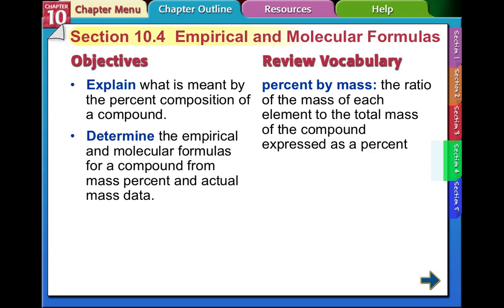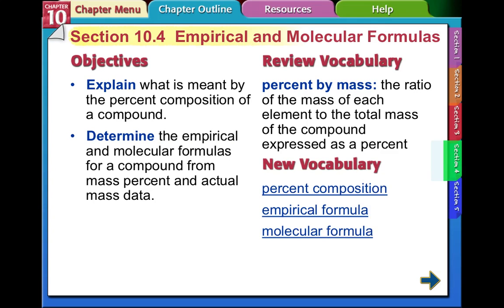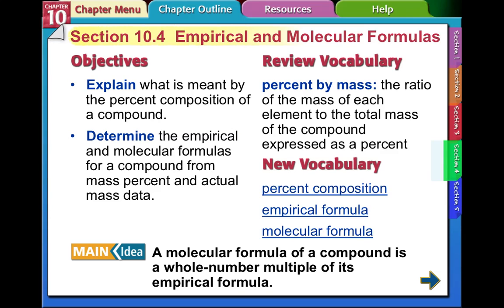Remember that percent by mass is the ratio of the mass of each element to the total mass of the compound, expressed as a percent. New vocabulary: percent composition, empirical formula, molecular formula. The main idea for this section: the molecular formula of a compound is a whole number multiple of its empirical formula.